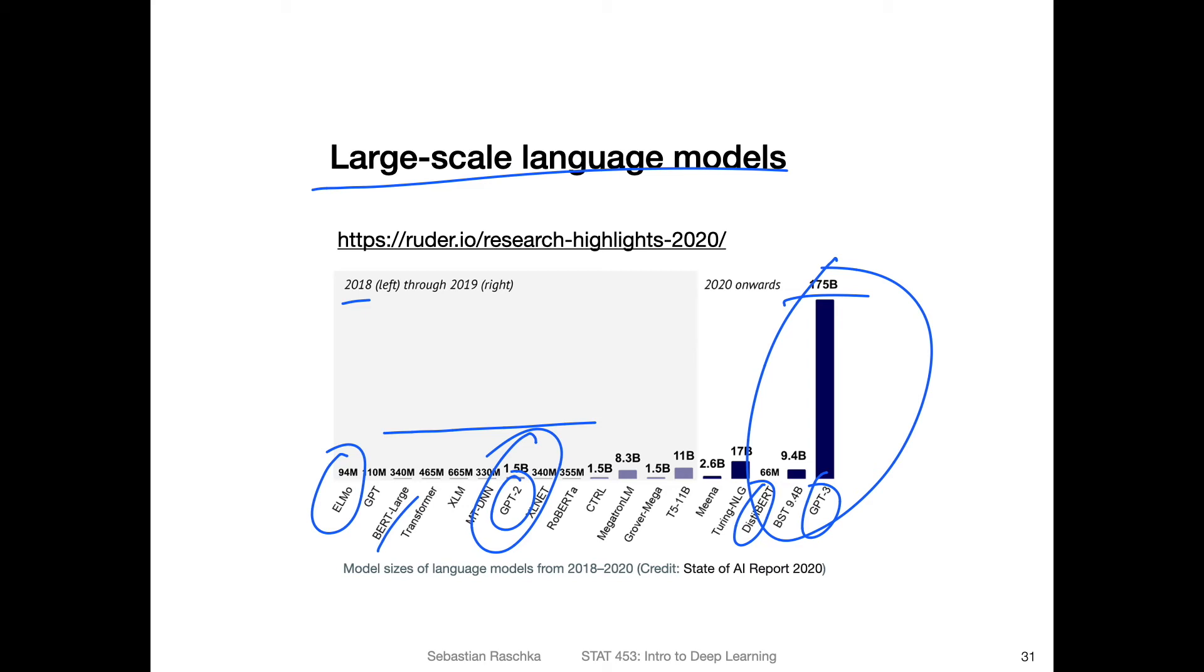Anyway, here is also interesting, a nice blog post summarizing the research highlights of 2020, focusing mostly on natural language processing. This is where I also found this image, which I think is based on some other website. If you're interested in these large-scale language models, it would be an interesting read for you. We will be covering some of these models at the end of this course when we talk about transformer models, because they are all based on the transformer architecture.